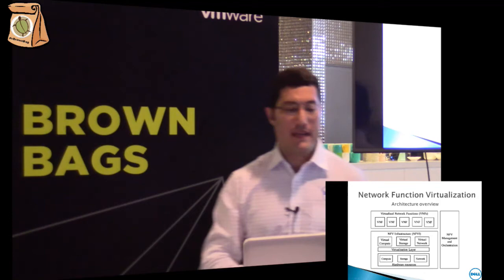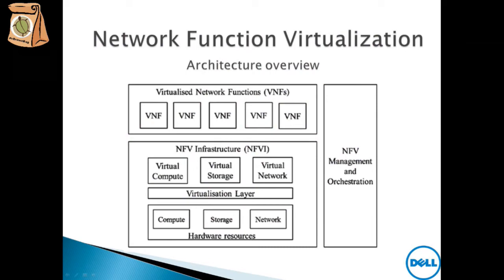Let's talk about the architecture of network function virtualization. The bottom layer is the hardware — the compute, the normal compute as in every data center. On top of that, we have virtual machines, and on top of the virtual machines we run the services. Examples of services we are going to run here include traffic analysis, network monitoring, load balancing, firewall, VPNs, and many more.